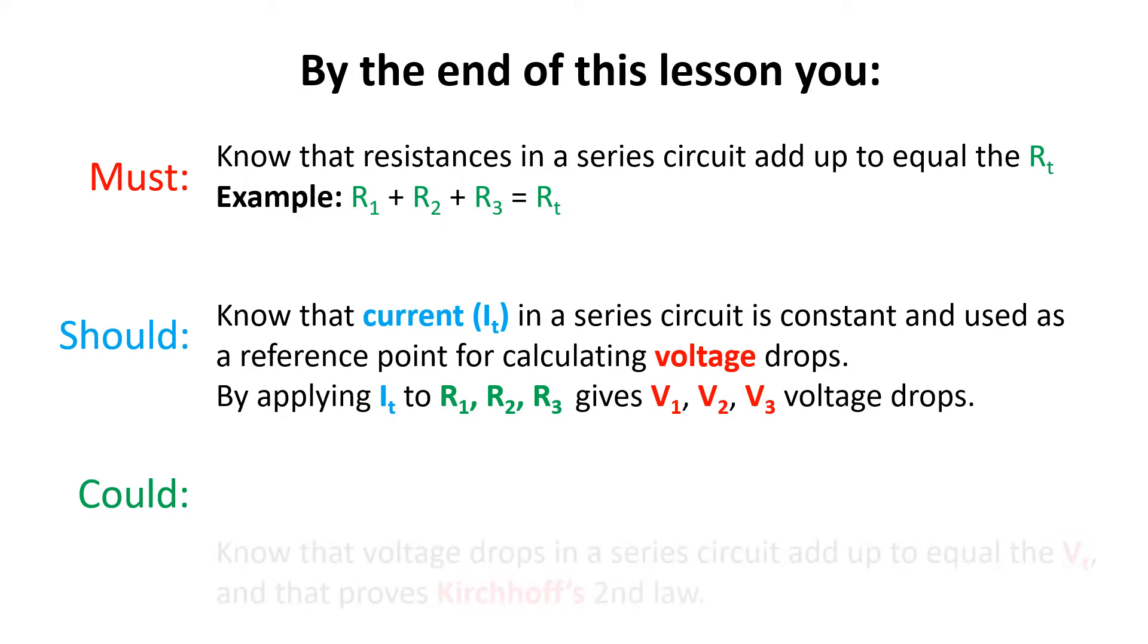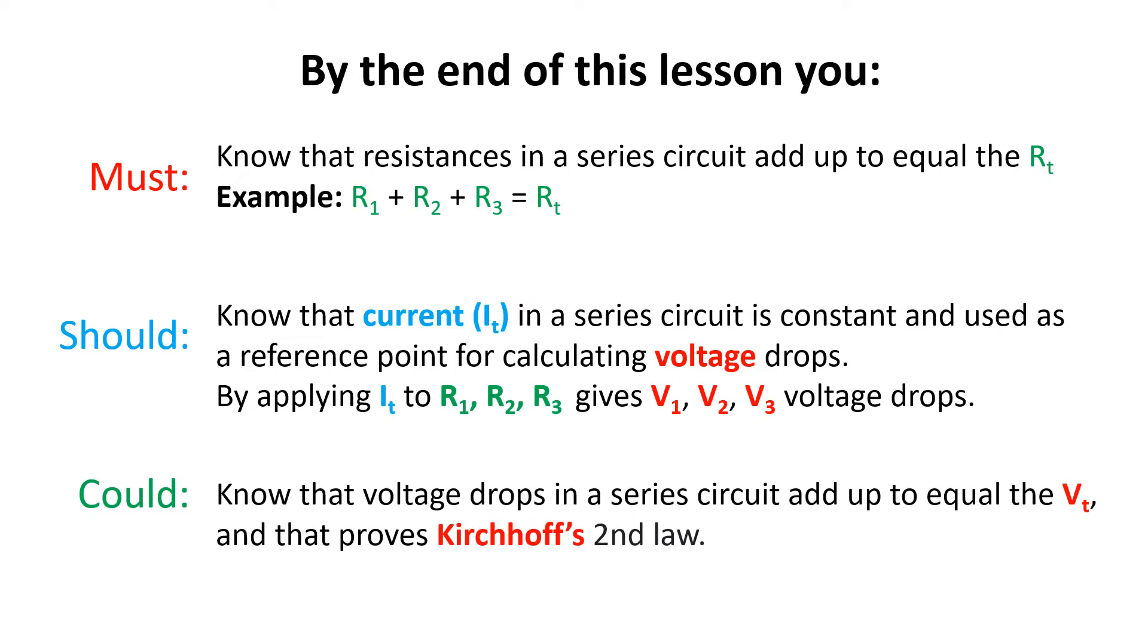Some of you could know that all the voltages in a series circuit add up to equal the voltage total or VT for short, and that proves Kirchhoff's second law, which states that the algebraic sum of potential drops in a closed circuit is zero.